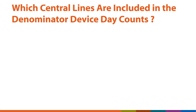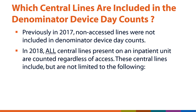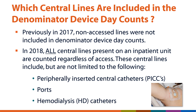Which Central Lines are included in the Denominator Device Day Counts? Previously, in 2017, non-access Central Lines were not included in Denominator Device Day Counts. However, in 2018, all Central Lines that are present on an inpatient unit are counted regardless of access. These Central Lines include, but are not limited to, peripherally inserted central catheters or PICs, ports, and hemodialysis catheters.